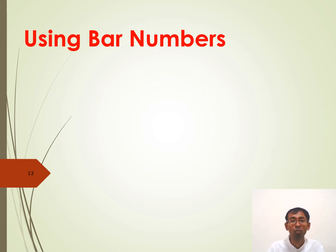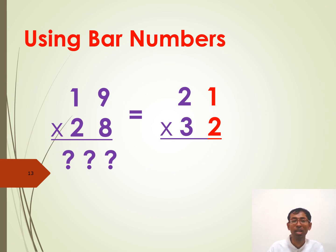We will see an example where we use bar numbers and make our life so easy. Suppose there is a multiplication. Nineteen times twenty-eight. So, we will convert these nineteen and twenty-eight into bar numbers. Nineteen is twenty minus one. So, we write it as a two bar one. Bar one is nothing but minus one. Twenty-eight is thirty minus two. So, we write it as three bar two. And, there are no carries here. Very easily we can do this multiplication using the vertically and crosswise formula.